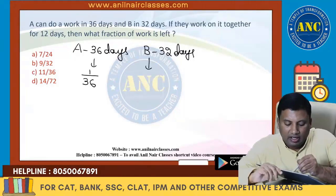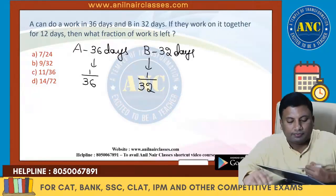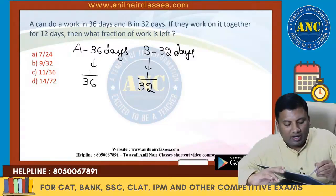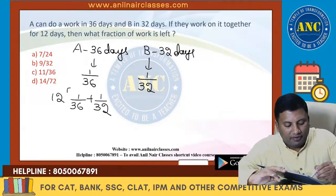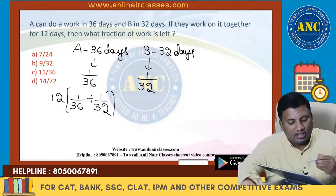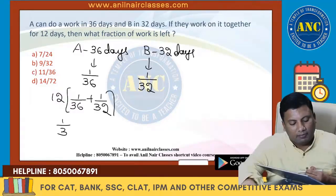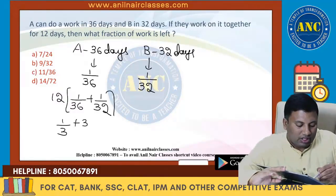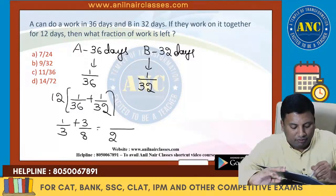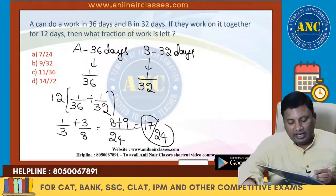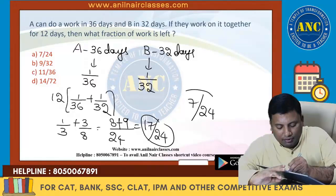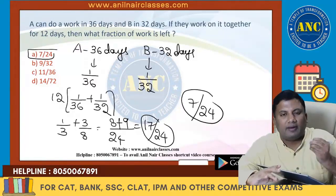In one day A does 1/36 and B does 1/32. If they work together for 12 days, work done = 12/36 + 12/32 = 1/3 + 3/8. That equals (8 + 9)/24 = 17/24. So remaining work is 7/24.